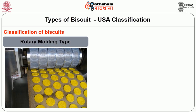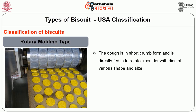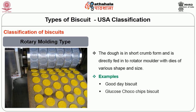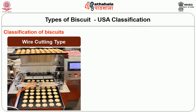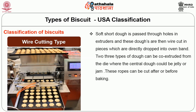Another type is the rotary molding type. The dough is in short crumb form and is directly fed into a rotary molder with dies of various shapes and sizes. Good Day, glucose, and chocolate chip biscuits are examples of rotary molded biscuits. The third type in the USA classification is the wire cutting type. Here the soft short dough is passed through holes in extruders and the dough is wire cut into pieces which are directly dropped onto the oven band. Butter cookies and chocolate cookies are examples of wire cut type biscuits.